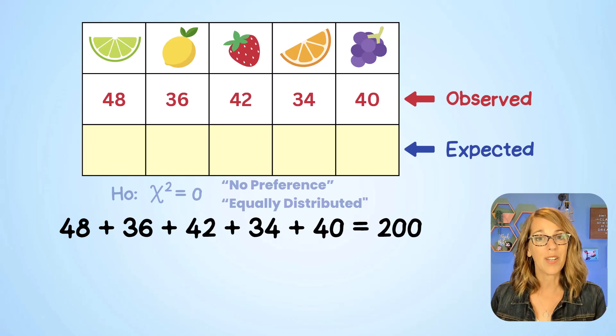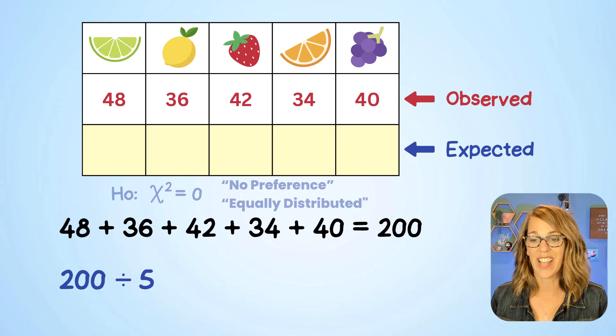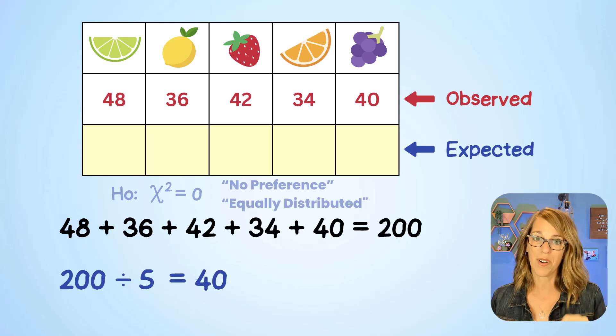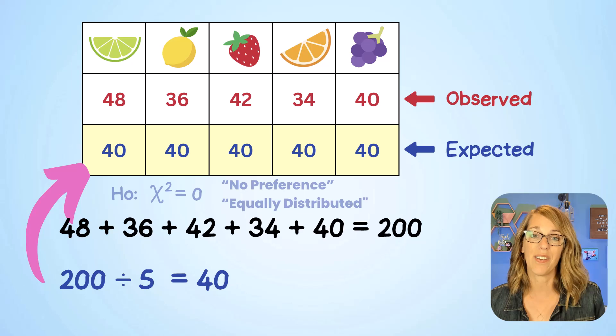I want to divide those equally into our five flavors, and that gives me 40 per flavor. This is going to be the expected value for each of the flavors.